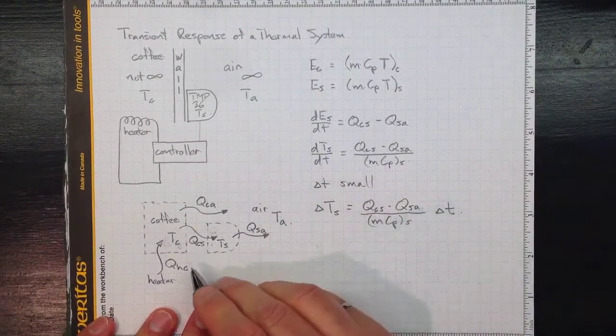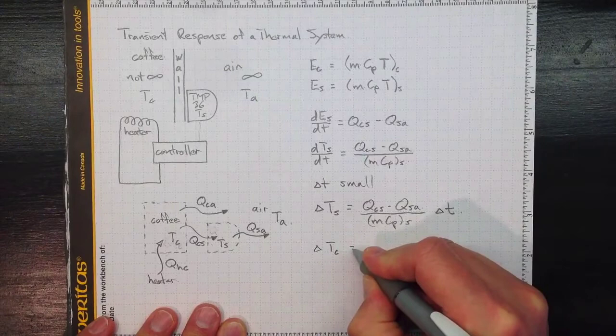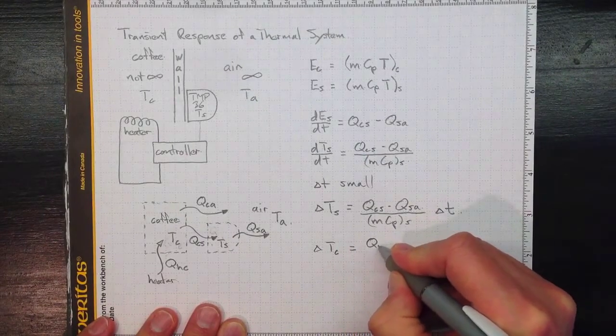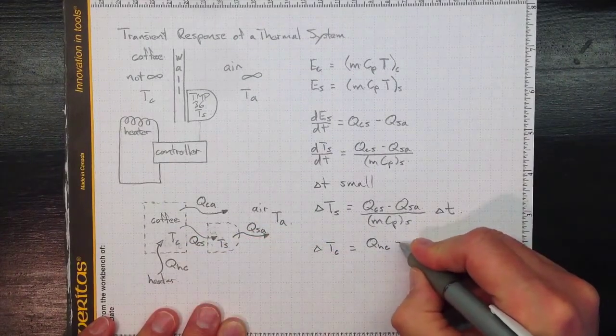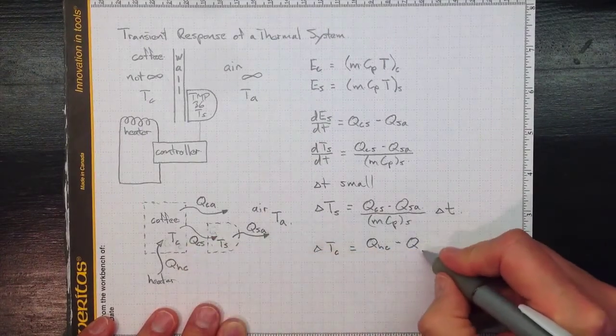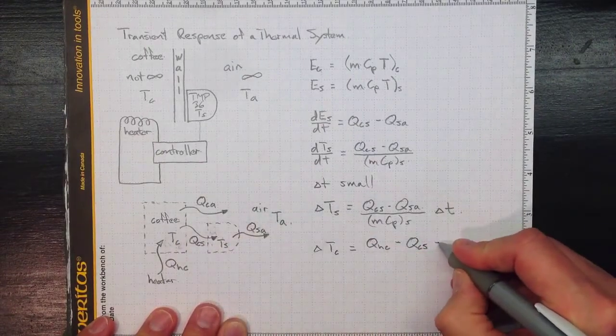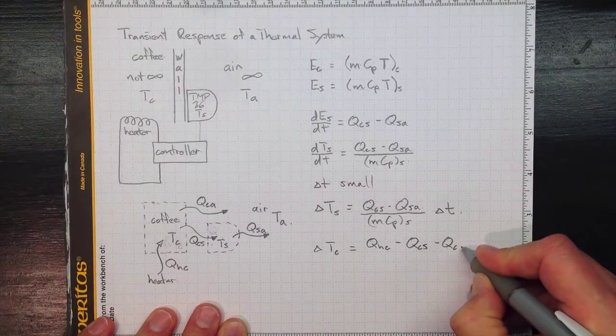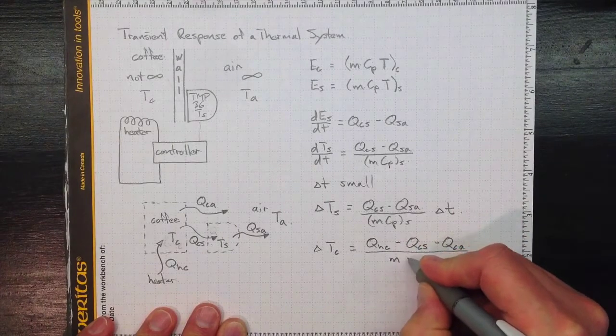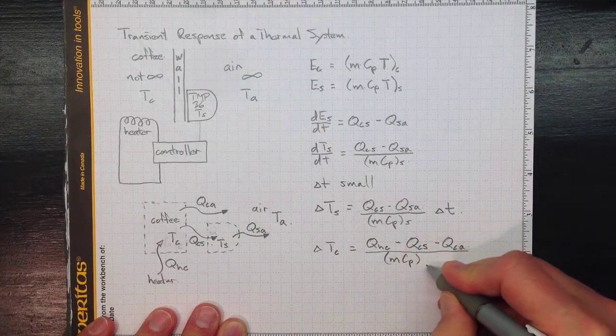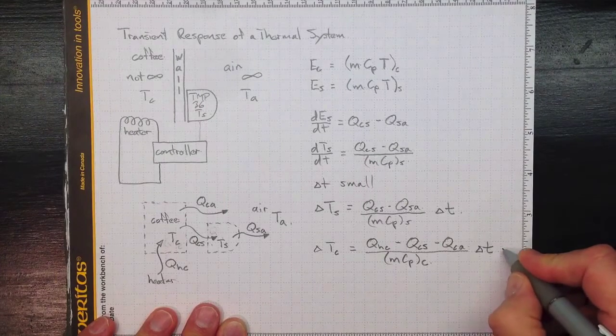Likewise, if we want to know what's going on with the coffee, we'll wind up with the change in temperature of the coffee depending on the heat coming in from the heater, so Q_HC, the amount of watts we're putting in from the heater, minus whatever went out to the sensor, Q from the coffee to the sensor, minus whatever went out to the air, Q from the coffee to the air, all divided by MCP, the mass and specific heat for the coffee and the cup together, all times delta T, the short time step.